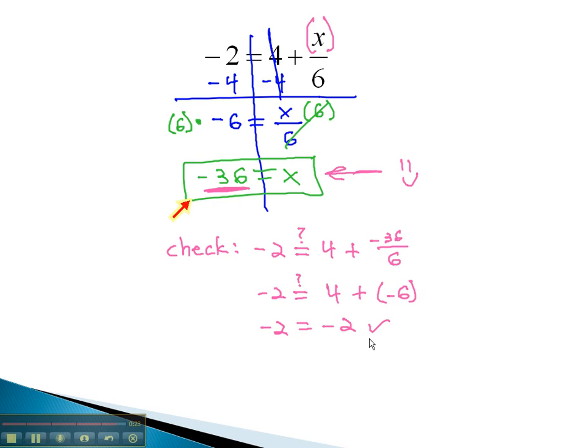x equals negative 36 is our solution, the only solution that can be plugged in for x, which will give us a true equation. We solve these two step equations by adding or subtracting first, and multiplying or dividing second.